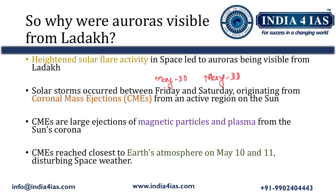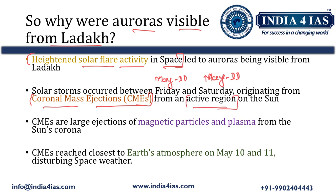Why were auroras visible from Ladakh? Usually they are not visible from lower latitudes such as the tropics and equator. The reason is increased intensity of solar activity — specifically coronal mass ejections from active regions on the sun, which produce high-intensity solar flares and solar storms.